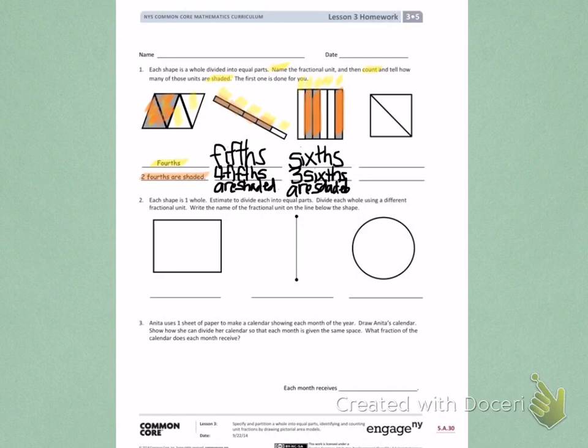Number two, each shape is one whole. Estimate to divide each into equal parts. Divide each whole using a different fractional unit. Write the name of the fractional unit on the line below the shape.